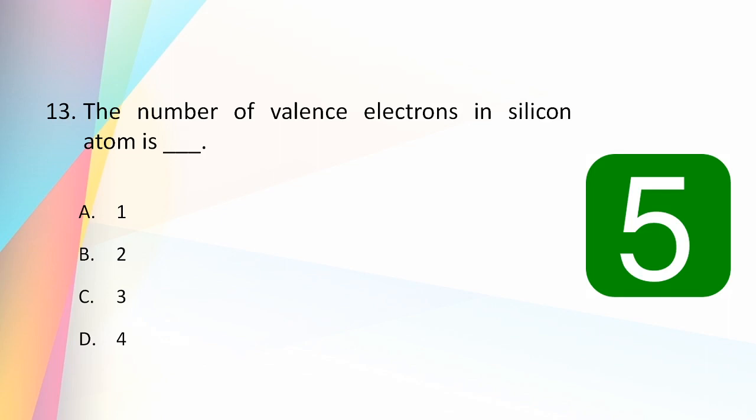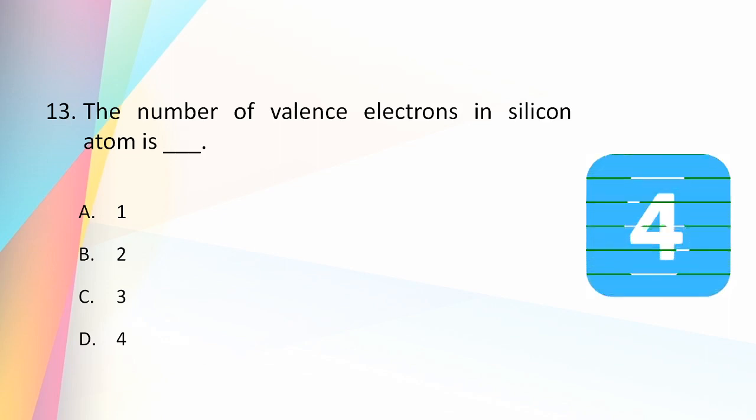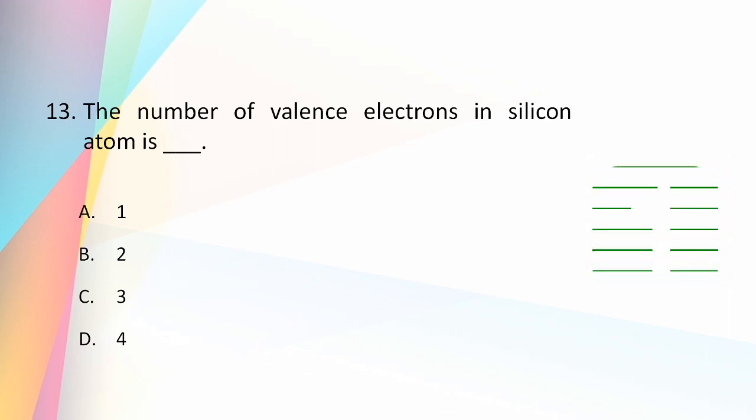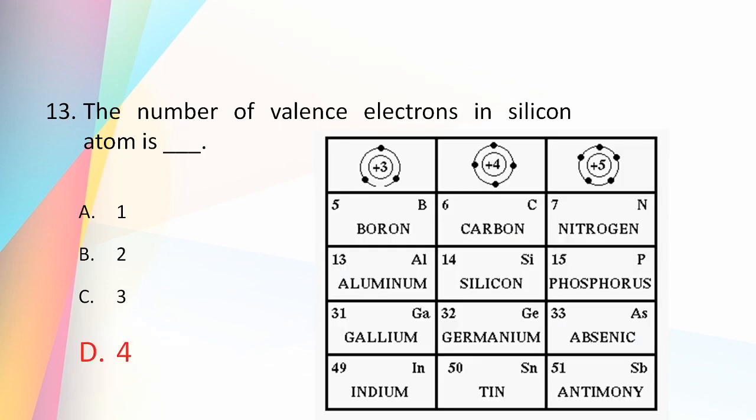The total number of valence electrons in a silicon atom is 4. The silicon atom has 14 electrons with a distribution of 2-8-4, meaning the outer valence shell has 4 electrons, placing silicon in group 4.